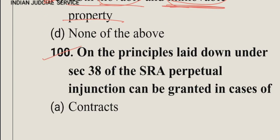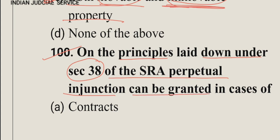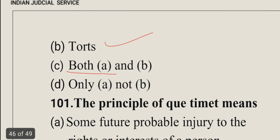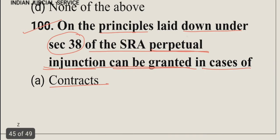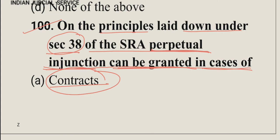Question number 100: On the principles laid down under section 38 of the SRA, a perpetual injunction can be granted in case of — option A: contract, option B: torts, option C: both A and B, option D: only A not B. Under section 38, particularly subsection 2, a perpetual injunction can be granted in case of contract, not tort. The answer is option D.